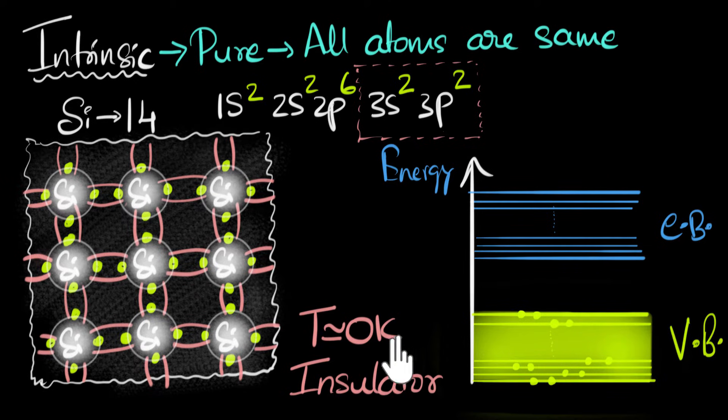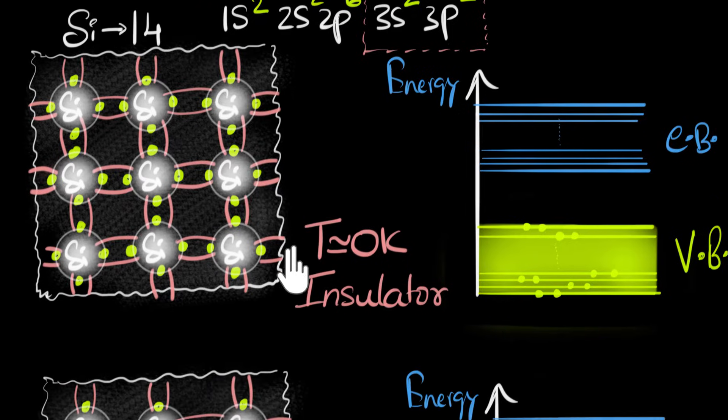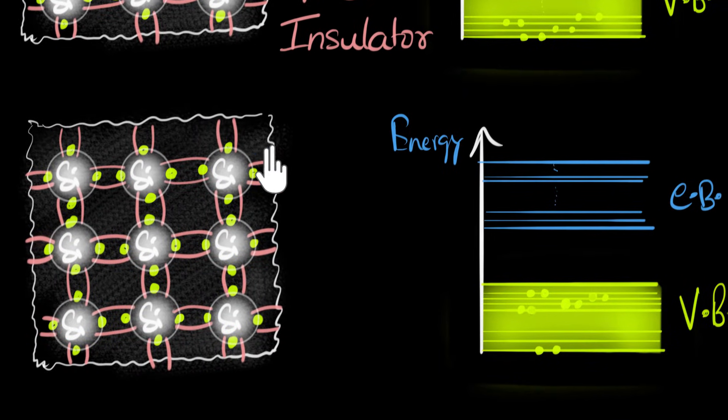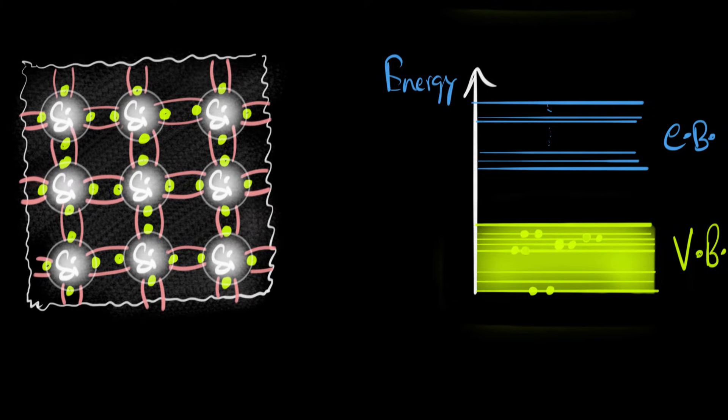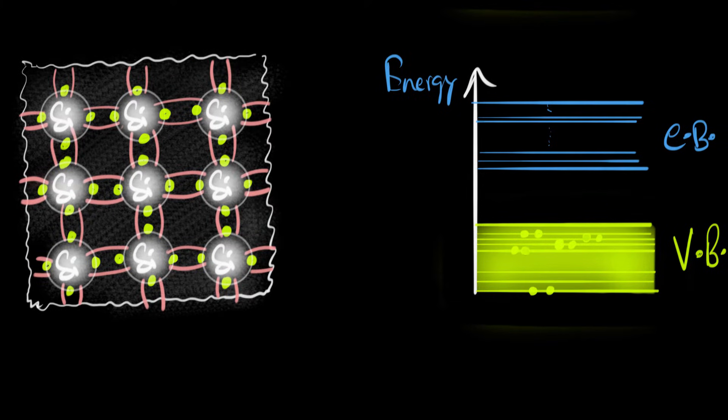So what happens if we increase the temperature? Let's say we bring it all the way to room temperature. Well, let's find out. Excellent. So imagine we are now at room temperature. Let's say that's about 300 Kelvin.